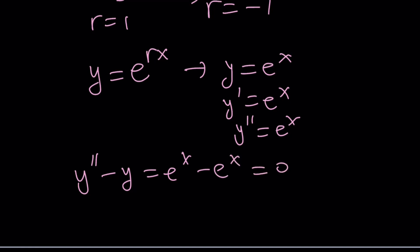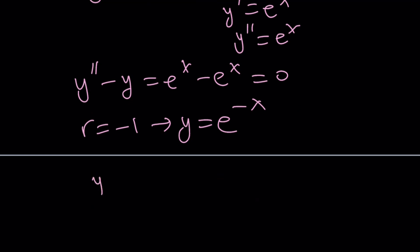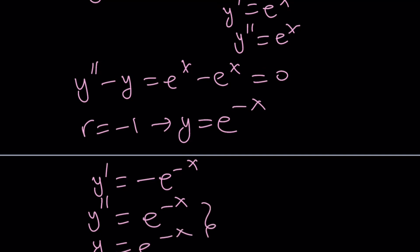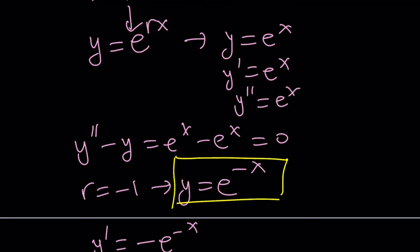If r equals negative 1, you get y equals e to the power negative x. The first derivative is negative e to the negative x, and the second derivative is positive e to the power negative x, which is the same as y. Therefore their difference is 0 again. So we have two solutions: y equals e to the x and y equals e to the negative x.